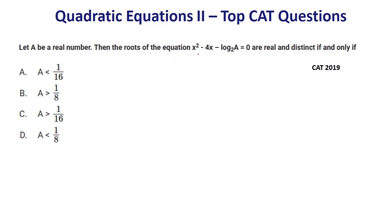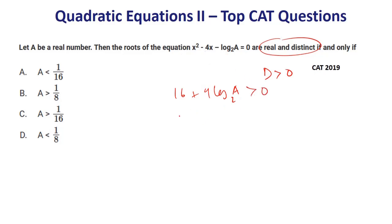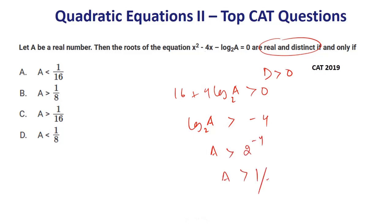Next: let a be a real number; roots of the equation are real and distinct, so discriminant > 0. We get b² - 4ac > 0, which gives 16 + 4·log₂(a) > 0, so log₂(a) > -4, meaning a > 2⁻⁴ = 1/16. The answer is option C.